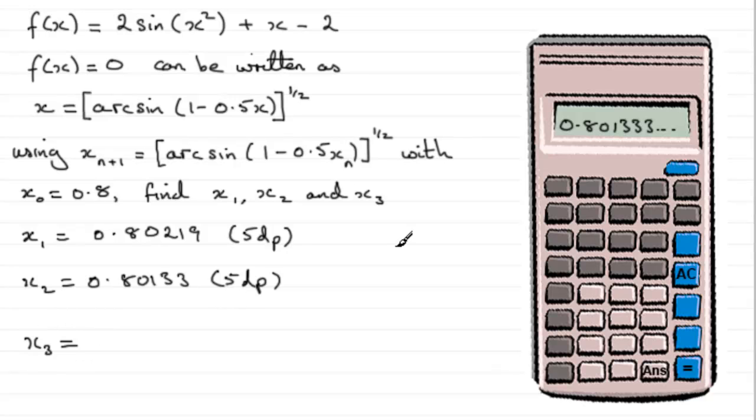Now to get x_3, all you've got to do is press equals again. As soon as you press equals, the screen will clear, and you should find that you get the next value, x_3, as being 0.801665, and so on. So giving this one to five decimal places, you'll have 0.80167. I hope that gives you some idea then how to do questions like this.